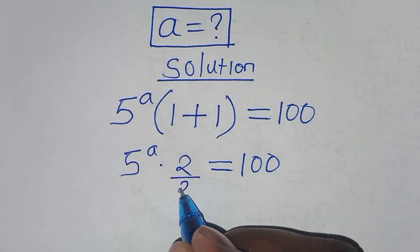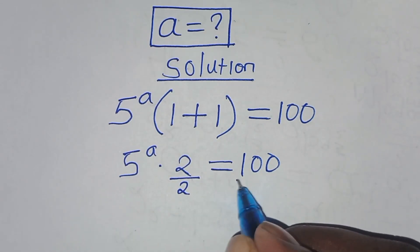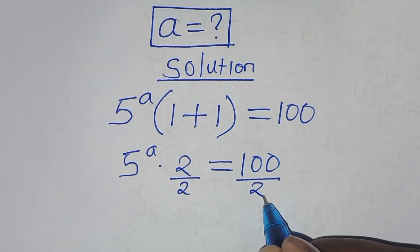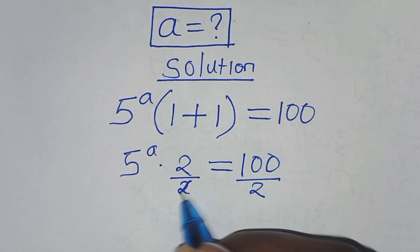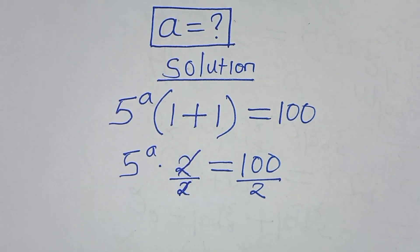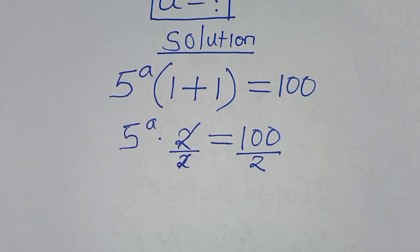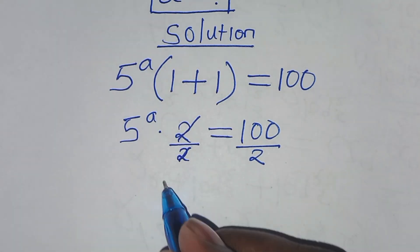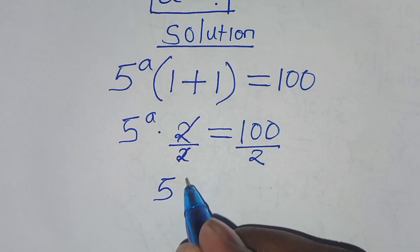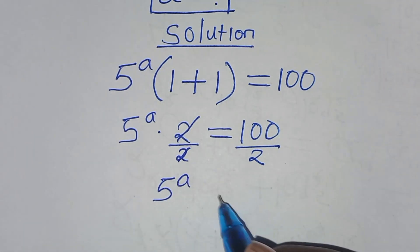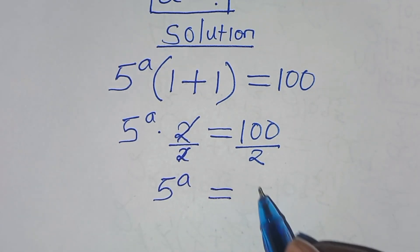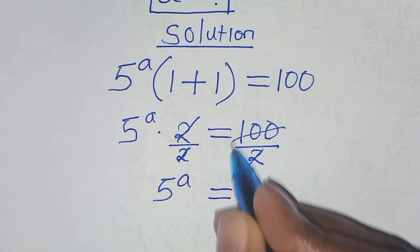Let's divide both sides by 2, so that now here, 5 to power a, this is equal to 50.